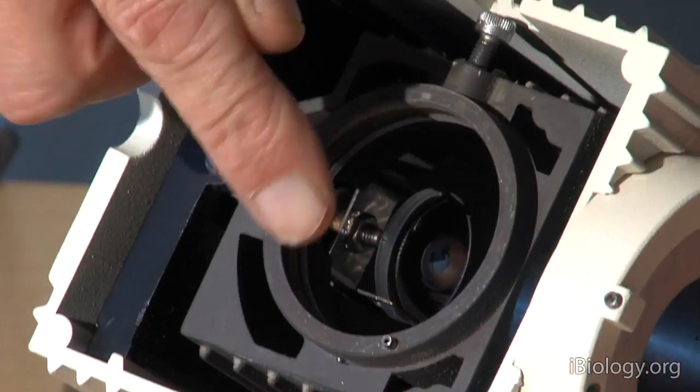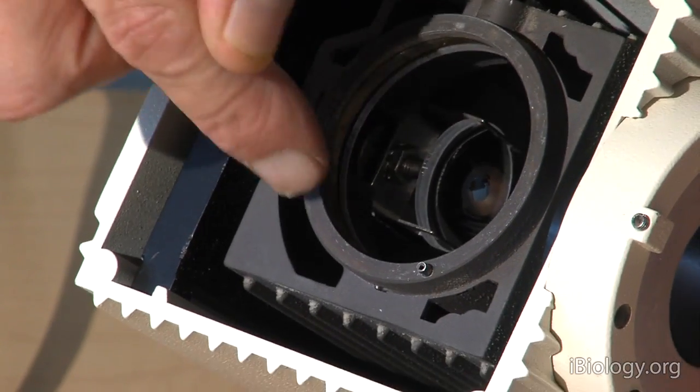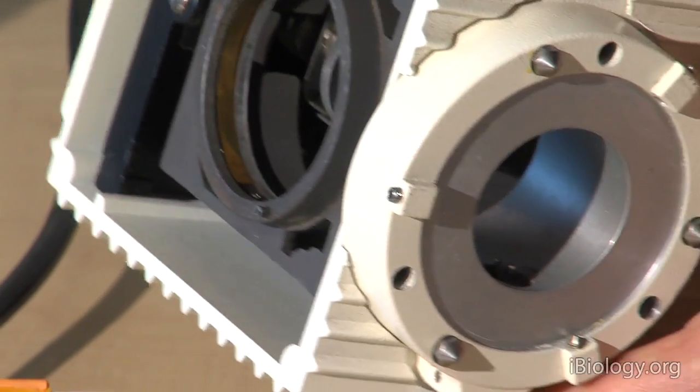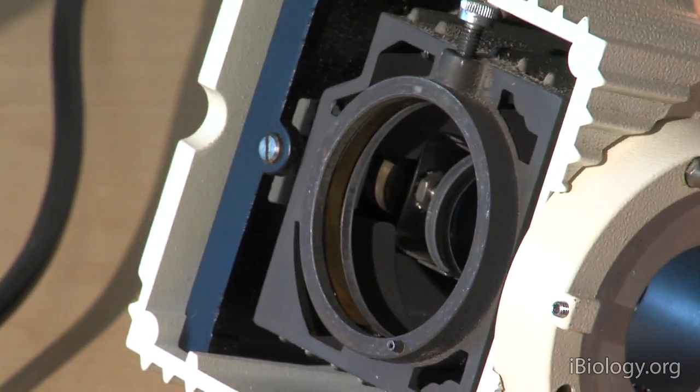Also inside this lamp house there is often a mirror, a parabolic mirror, and that reflects the light going into the back direction so that it comes out in the front and you get more light coming out. This is a mercury arc lamp.